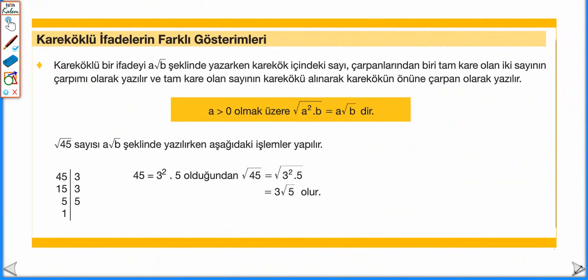Kare köklü bir ifadeyi A kök B şeklinde yazarken, kare kök içindeki sayı çarpanlarından biri tam kare olan iki sayının çarpımı olarak yazılır. Ve tam kare olan sayının kare kökü alınarak kökün önüne çarpan olarak yazılır. A sıfırdan büyük olmak üzere, kare kök içinde A² · B ifadesinde A² tam kare sayıdır. Kökün dışına çıkarken bu 2 gider ve kökün önüne A olarak yazılır. B tam kare sayı olmadığı için kökün içinde kalır; A√B olarak ifade edilir. Buradaki A, kare köklü ifadenin kat sayısı olarak da ifade edilebilir.